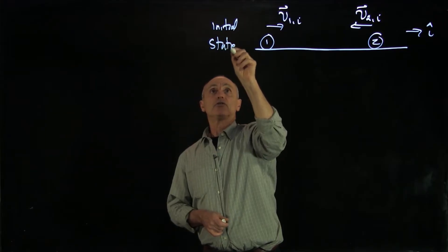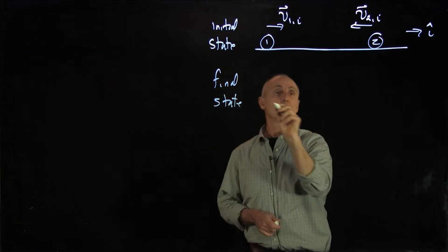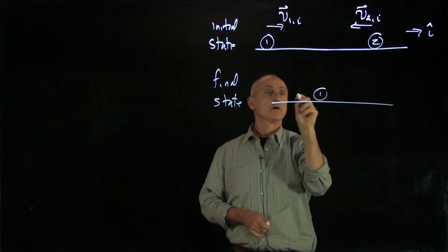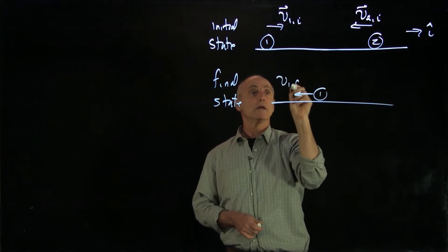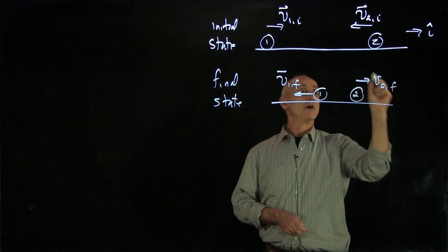And our final state after the collision, we have object 1, we'll say it's moving this way, v1 final, and object 2 moving that way, v2 final.